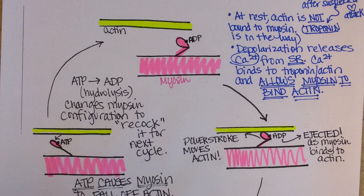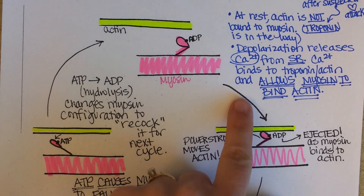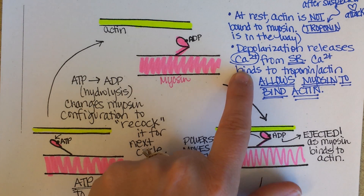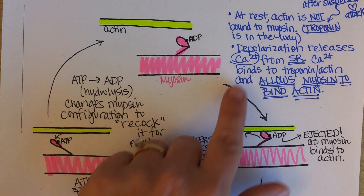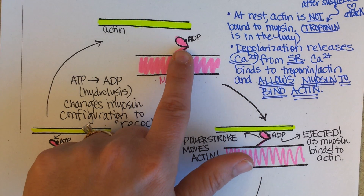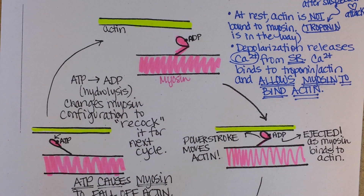Then you can do the whole thing over again. If you have myosin and actin, the other ingredients you need are calcium and ATP. Calcium availability is key for how long and how powerfully you can contract — the more calcium, the more myosin heads can be involved. The more ATP, the longer you can keep doing the cycle.